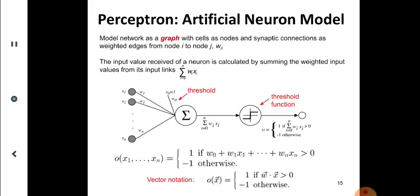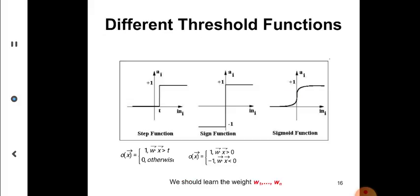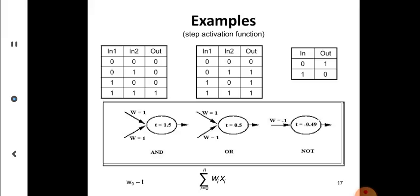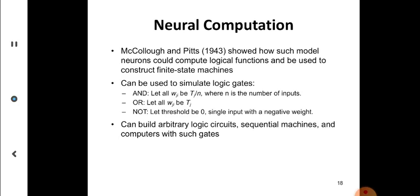Perceptron happens to be a single layer model network as a graph. The artificial neural model perceptron is a graph with a threshold value. This is a cumulative sum applied to the threshold function. There are different types of threshold functions: step function, sine function, sigmoid function. Why do you use sigmoid function? There are examples you can see here. Step activation function examples. Neural computing goes back a long time.